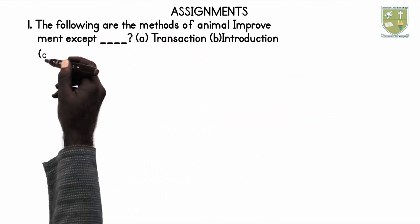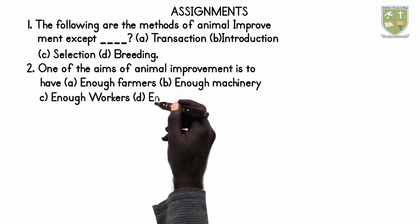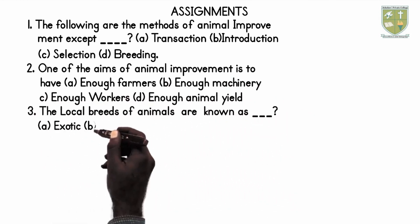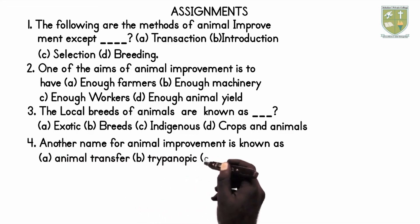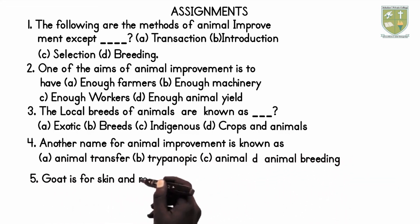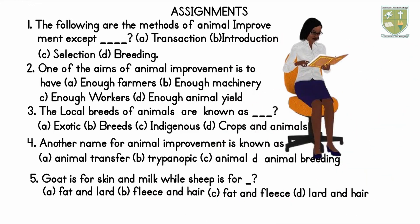Assignments. 1. The following are the methods of animal improvement except: A. Transaction, B. Introduction, C. Selection, D. Breeding. 2. One of the aims of animal improvement is to have: A. Enough farmers, B. Enough machineries, C. Enough workers, D. Enough animal yield. 3. The local breeds of animals are known as: A. Exotic, B. Breeds, C. Indigenous, D. Crops and animals. 4. Another name for animal improvement is known as: A. Animal transfer, B. Trypanopic, C. Animal castration, D. Animal breeding. 5. Goat is for skin and milk while sheep is for: A. Fat and lard, B. Fleece and hair, C. Fat and fleece, D. Lard and hair.